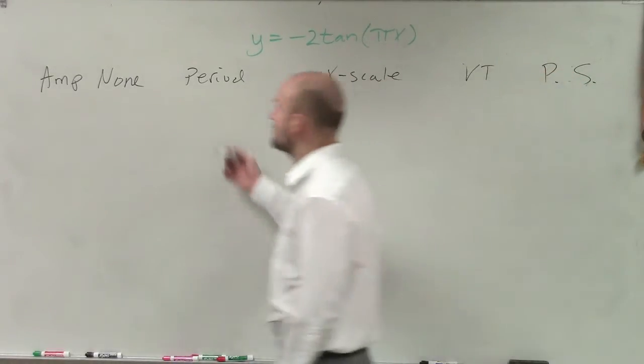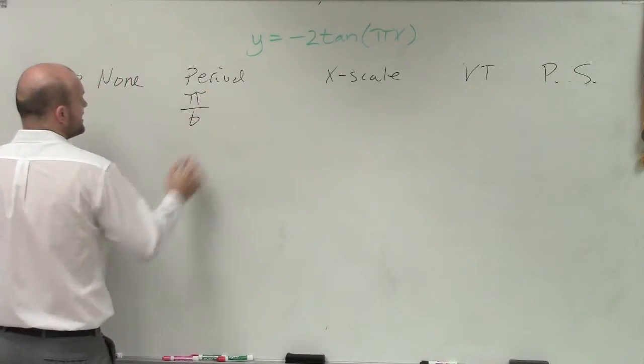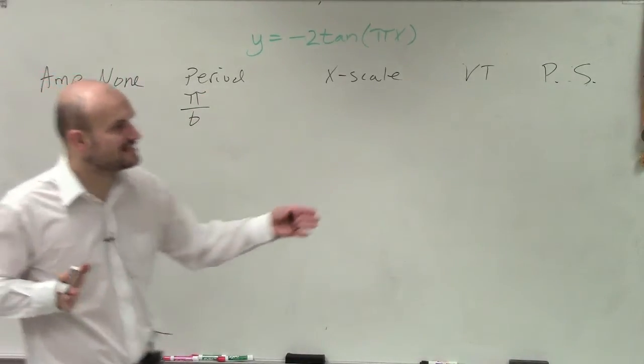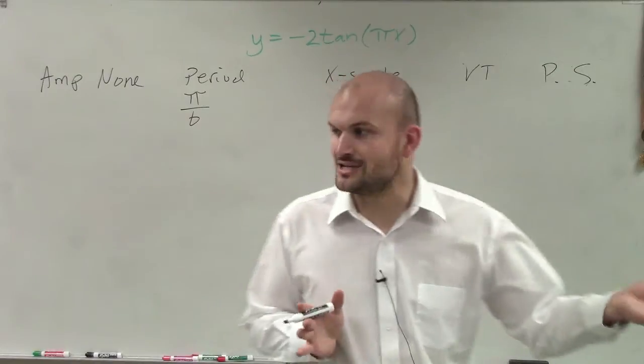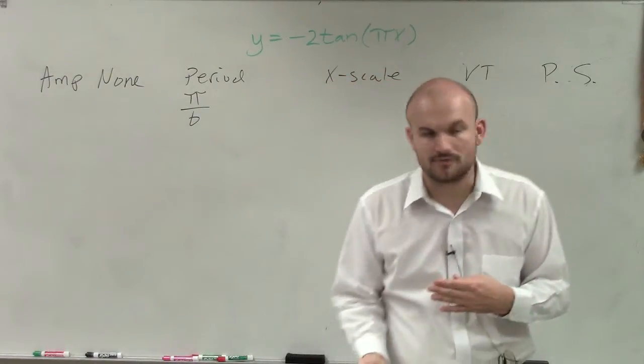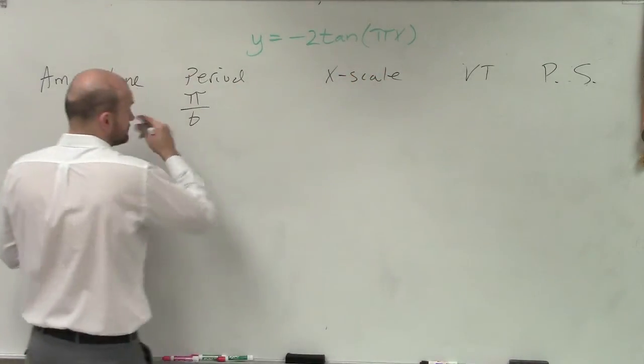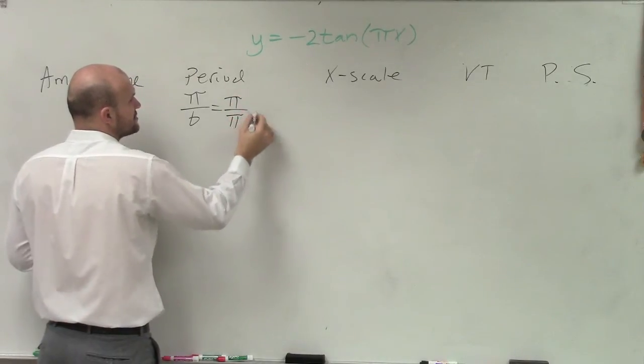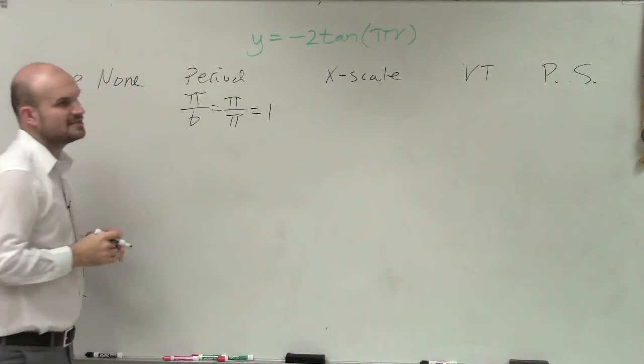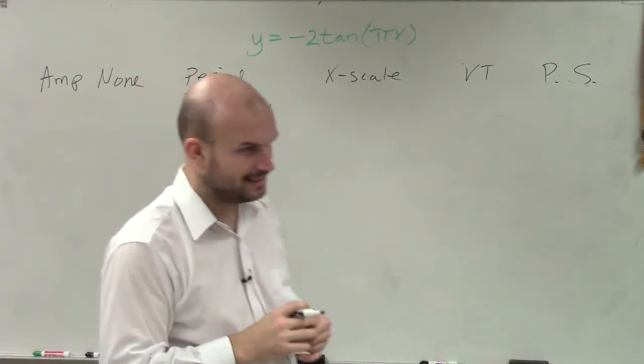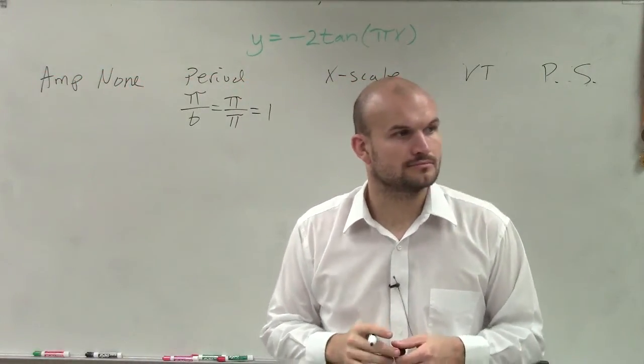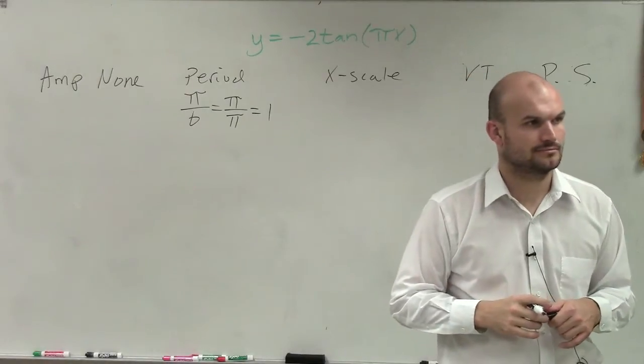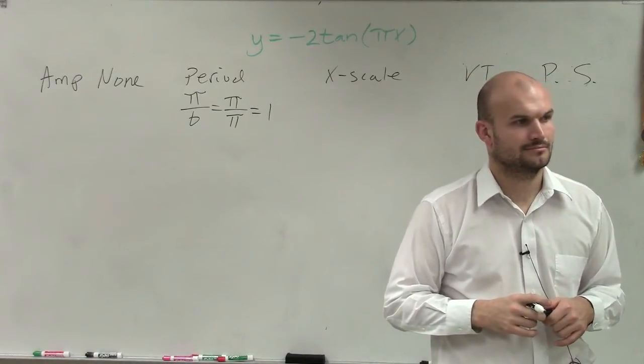The period. I told you guys we changed the period from pi divided by b. It only takes a distance of pi for the tangent and cotangent for it to repeat itself. So in this case, I look at this, and I have pi divided by pi. So therefore, my period is equal to 1.